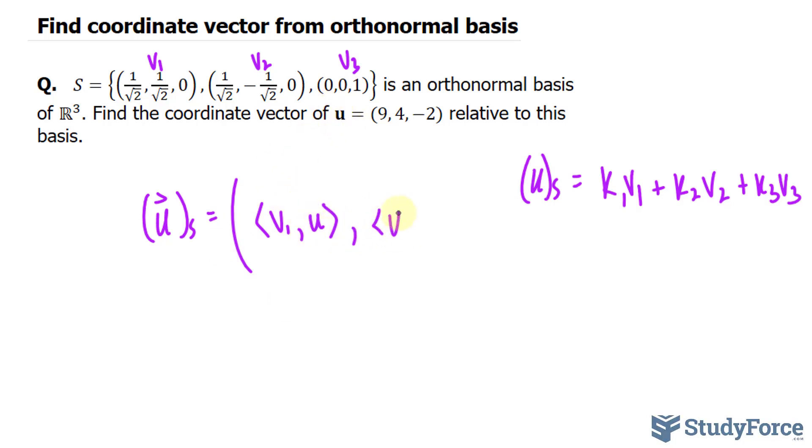So let's go ahead and do that. We have v₁ with u, V2 with u—and remember that's our vector—and V3 with u, the inner product. And we already know how to find the inner product.